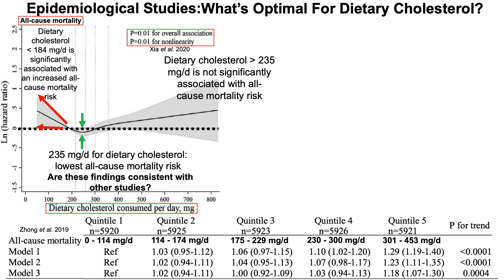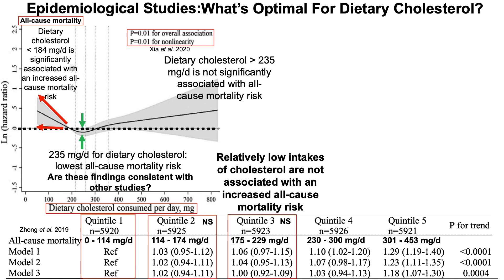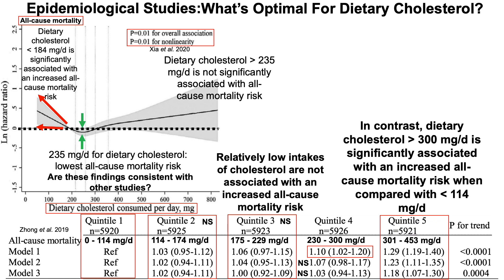Are these findings consistent with other studies? Looking at the Zhang study for all-cause mortality risk: model one is the least adjusted, model two has more variables adjusted for, and model three is the fully adjusted model, again across five quintiles of dietary cholesterol intake. Compared with the referent of 0 to 114 milligrams per day, relatively low intakes are not associated with increased all-cause mortality risk. Model one shows 230 to 300 milligrams per day is significantly associated with increased all-cause mortality risk, but when further variables are included in model two and three, that statistical significance is lost. However, in quintile five across all three models, dietary cholesterol intakes of 301 to 453 milligrams per day are associated with increased all-cause mortality risk compared with intakes less than 114 milligrams per day.